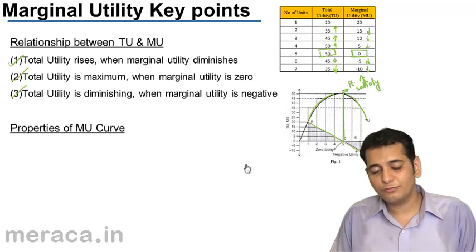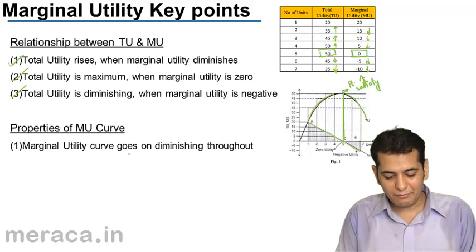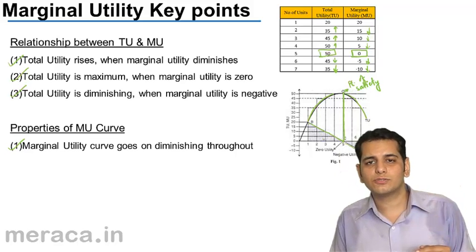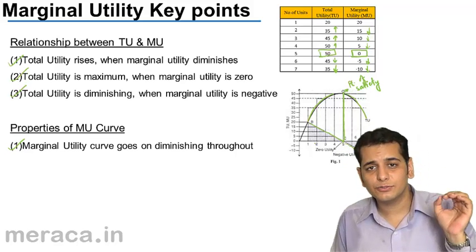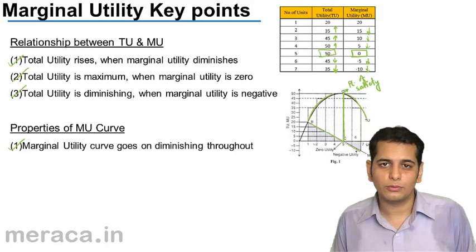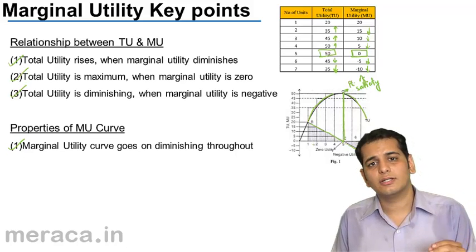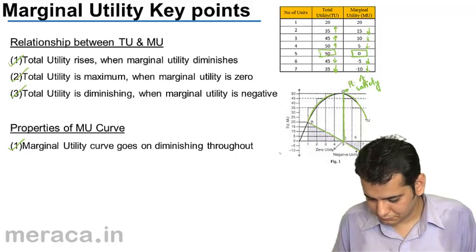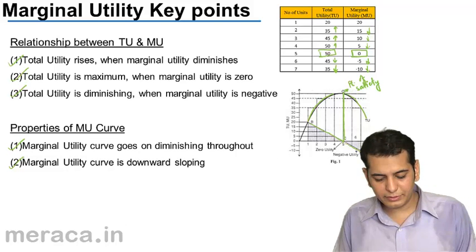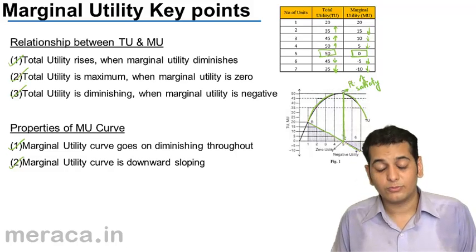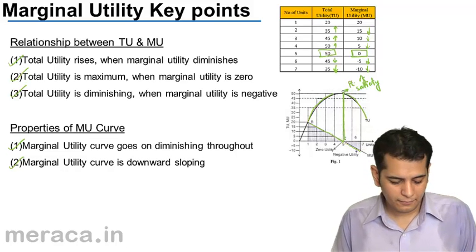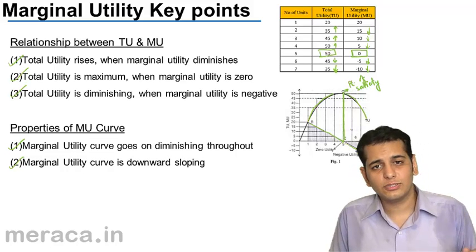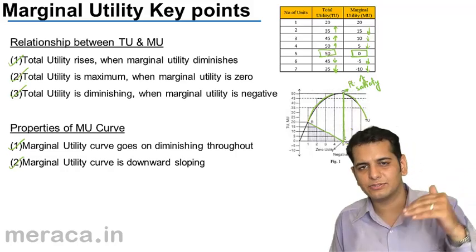What are the properties of the MU curve? First, the MU curve goes on diminishing throughout — the MU curve always has a downward slope, and this property is constant throughout. Second, the marginal utility curve is downward sloping. Since the marginal utility curve is diminishing throughout, it gets a downward slope.